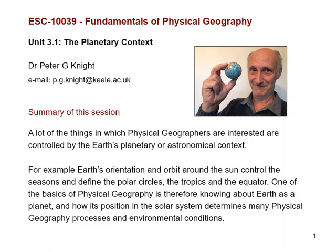Hello, Peter Knight here with unit 3.1 of Fundamentals of Physical Geography. Here we're talking about the planetary context of physical geography. A lot of the things in which physical geographers are interested are controlled by the Earth's planetary or astronomical context. For example, Earth's orientation and orbit around the sun control the seasons and define the polar circles, the tropics and the equator. One of the basics of physical geography is therefore knowing about Earth as a planet and how its position in the solar system determines many physical geography processes and environmental conditions.